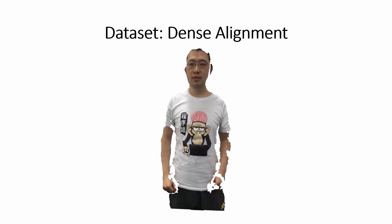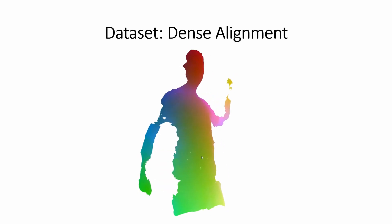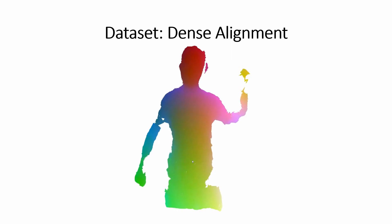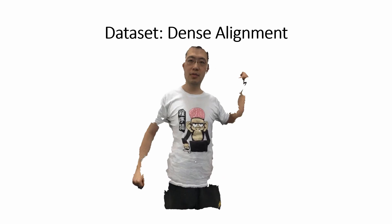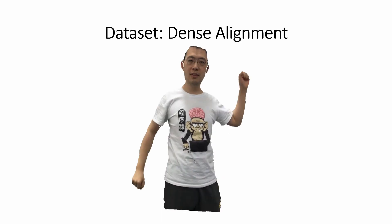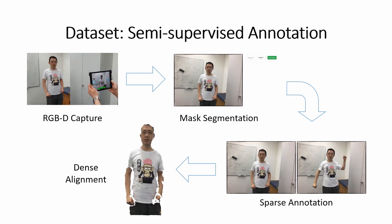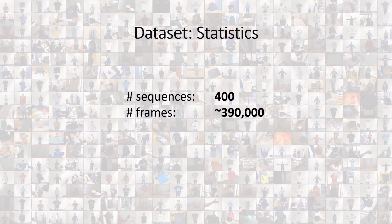We run our dense frame-to-frame alignment algorithm and review its results using a simple interface. The final result is a source object mesh that is densely aligned to fit the target frame. In total, we recorded 400 RGBD sequences comprising over 300,000 RGBD frames.